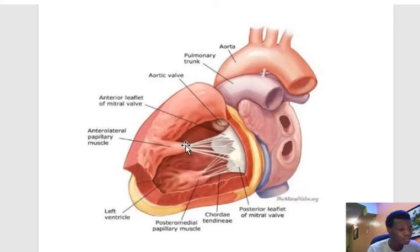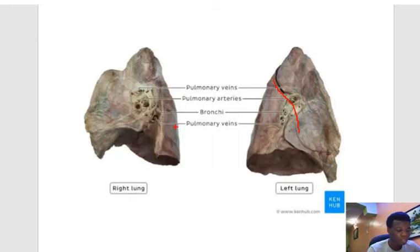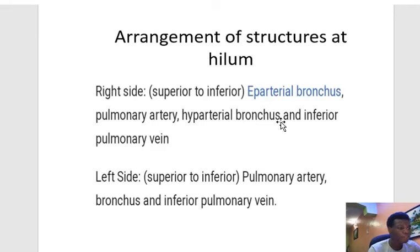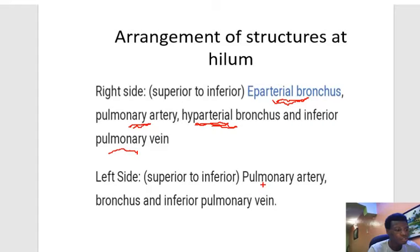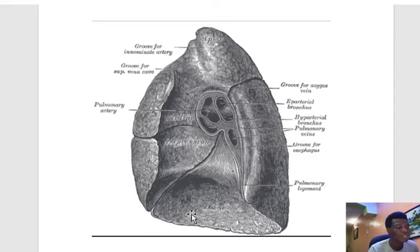Straightaway to our next model — the lungs. You have to be able to identify the two lungs. The left lung has just one oblique fissure, but for the right lung there are two fissures: the oblique and the horizontal. Now I want to draw your attention to the hilum of the lung, where structures are entering and leaving. For the right lung, from superior to inferior, we come across the eparterial bronchus first, then the pulmonary artery, followed by the hyparterial bronchus, and then the inferior pulmonary vein.